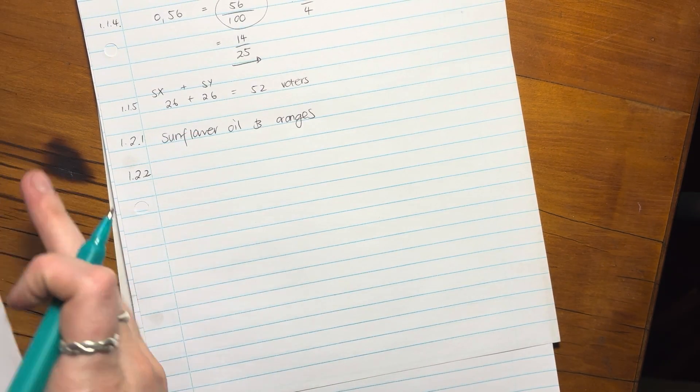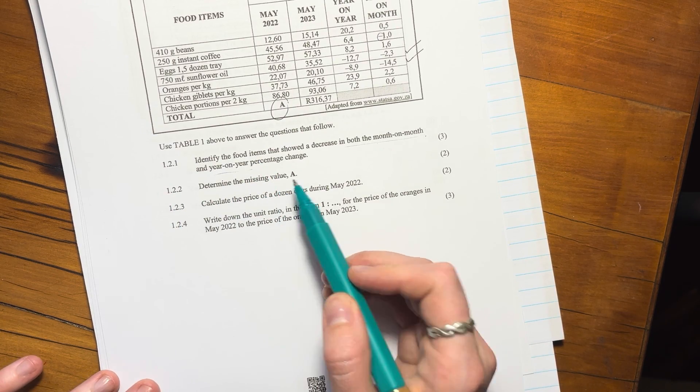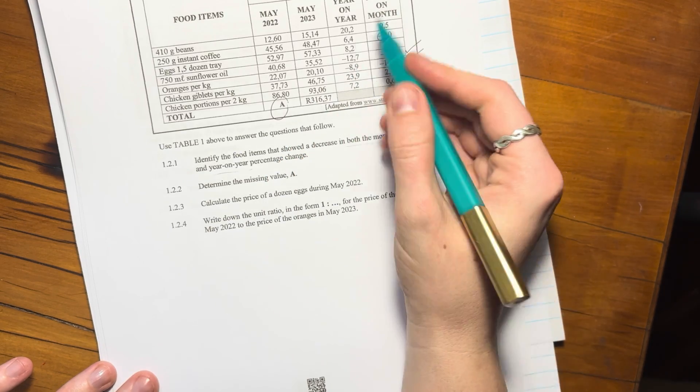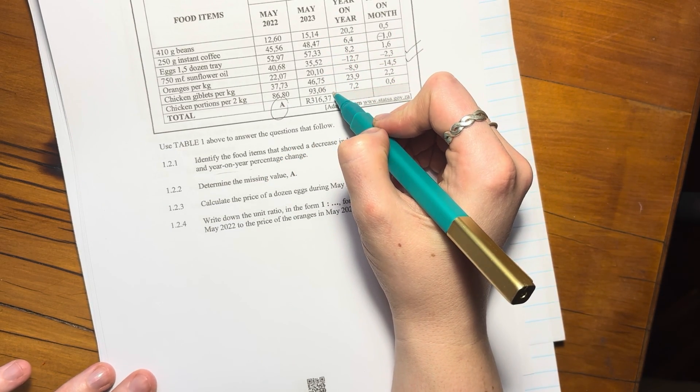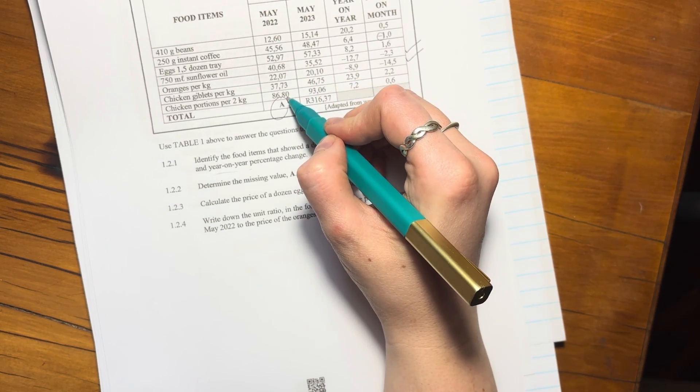Just be careful that you don't just write down one, because that's also a common mistake that students make. And that's that question done. Then 1.2.2 says determine the missing value. The missing value A is over here. It tells us it's a total value. So this value over here is the sum of those, because that's what a total value is.